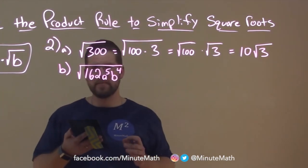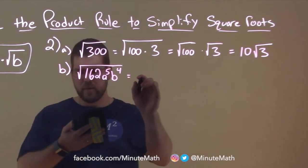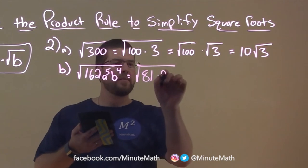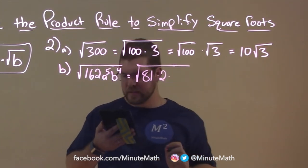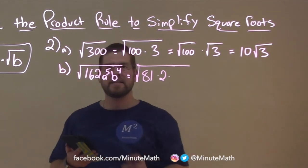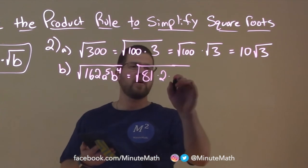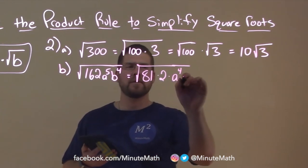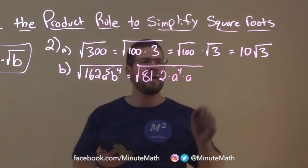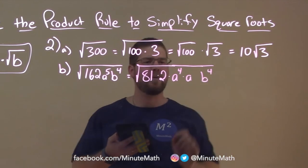Well, 162, that is 2 times 81. Okay, so let's see what that looks like here. 81 times 2 times, and then now we're going to break down A to the 5th power, right? If it was to the 4th power, I could take a square root easily. So let's go A to the 4th power times A to the 1st power, and we don't need to write that. And then we can just have B to the 4th power there.